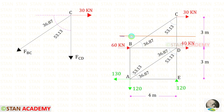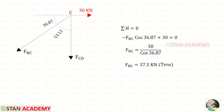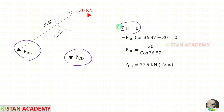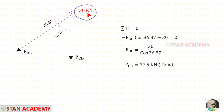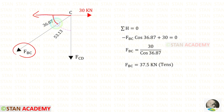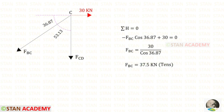Let us make the last section and do the analysis. We have already calculated FCD; we only need to find FBC. Applying Sigma H = 0: 30 is acting towards the right side, so it is positive. FBC is inclined and we need to resolve it horizontally using 36.87 degrees. FBC is acting towards the left side, so it is negative and we multiply by cos 36.87. We will get a positive value — that means FBC is tensile. We are now going to end this session. Thank you for watching this video.